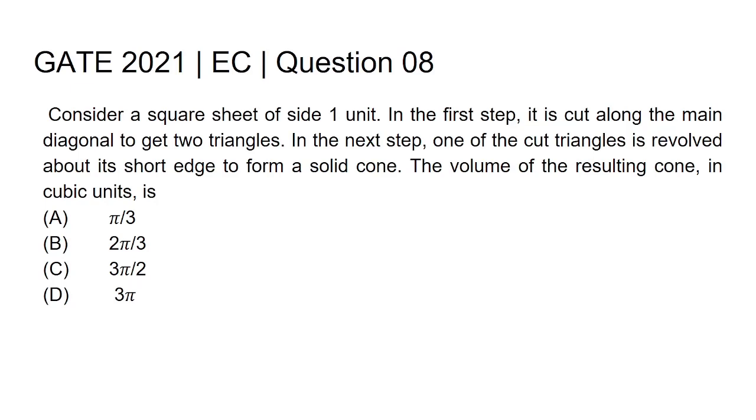One of the cut triangles is revolved about its short edge to form a solid cone. The volume of the resulting cone in cubic units is: option A, π/3; option B, 2π/3; option C, 3π/2; option D, 3π.